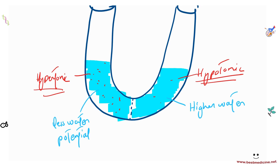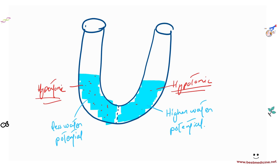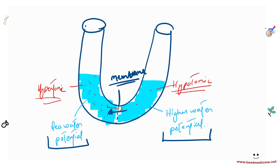Because there is a difference in water concentration, water will try to move. Water will move toward the left side because the right side has higher water potential — more water — while the left side has higher solute concentration. The solute would also try to move, however the partially permeable membrane only allows water through, not the solute.